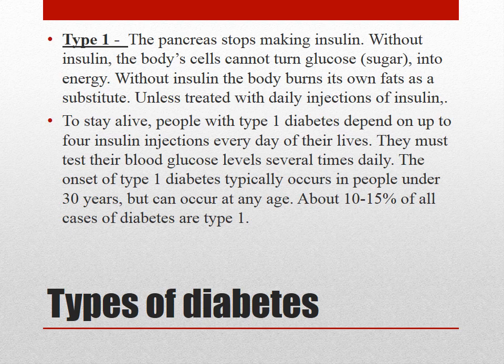There are two types of diabetes. Type 1 diabetes used to be called juvenile diabetes because normally people were just born with it. In Type 1 the pancreas actually stops making insulin, and without insulin the body cells can't turn glucose into energy - so it burns its own fat as a substitute. It has to be treated with daily injections of insulin; most people have to inject four times each day and continually test their blood glucose levels. About 10 to 15 percent of all cases in Australia are Type 1 diabetes.